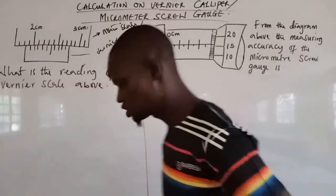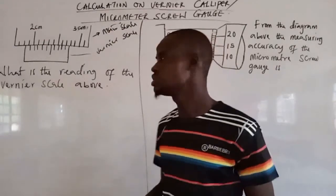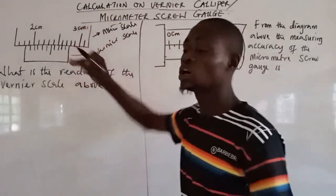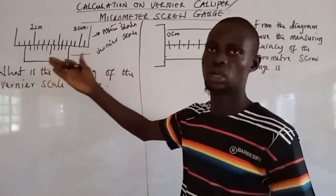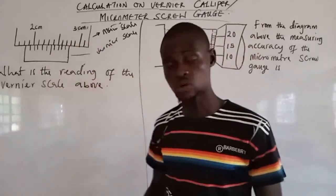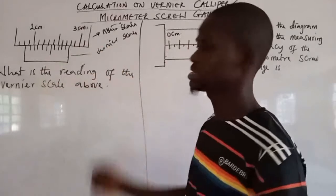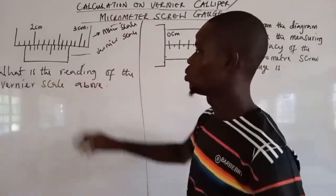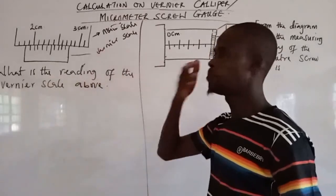So if we want to take a reading on a vernier caliper, we take the reading on the main scale, and at the same time we take a reading on the vernier scale. But the reading on the vernier scale is always taken using the accuracy of the instrument. The question on the board asks: what is the reading of the vernier caliper shown above?